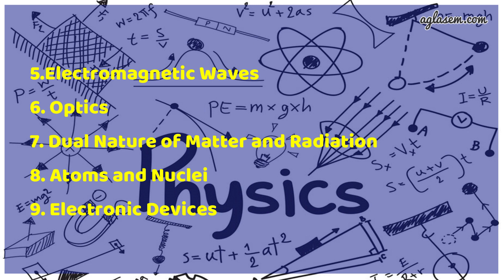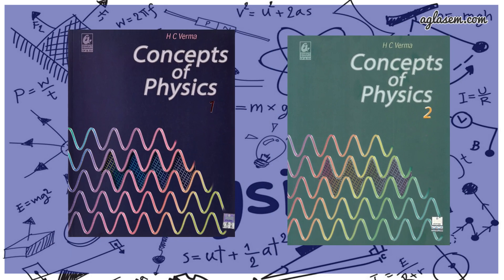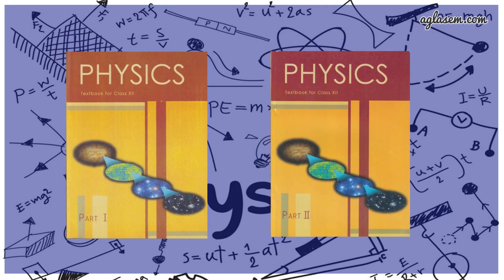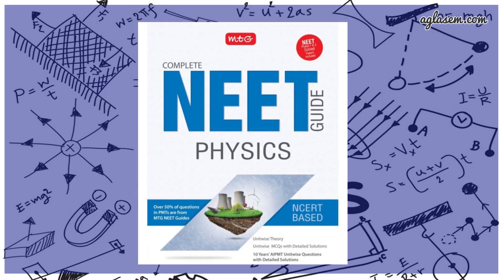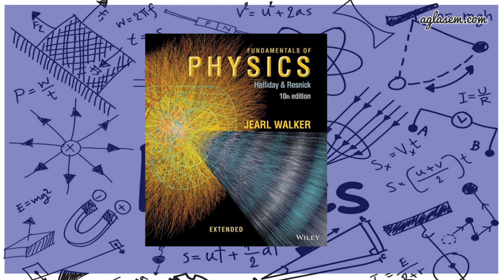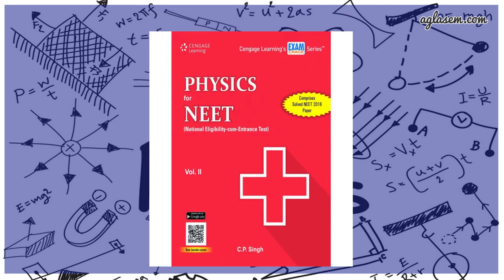Atoms and Nuclei, Electronic Devices. We are done with the physics portion. Now I will make your work easy by telling you the books you can refer to for physics. Best physics books for NEET 2019: 40 Days Physics for NEET by S.B. Tripathi, Concepts of Physics by H.C. Verma, NCERT Physics Part A and Part B, Complete NEET Guide Physics by MTG Editorial, Fundamentals of Physics by Halliday, Resnick and Walker, Physics for NEET by C.P. Singh, and Problems in General Physics by I.E. Irodov.